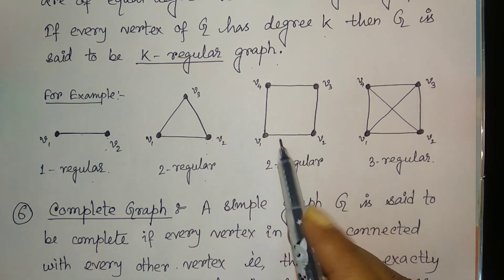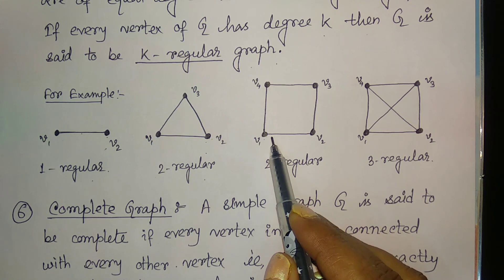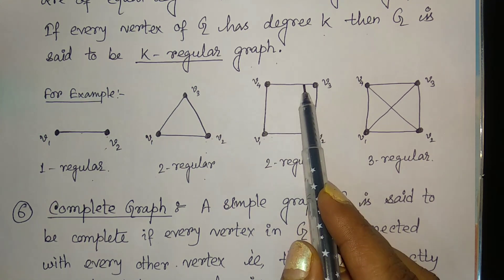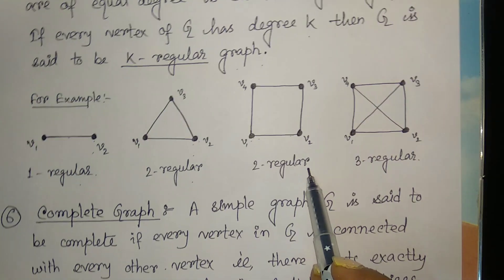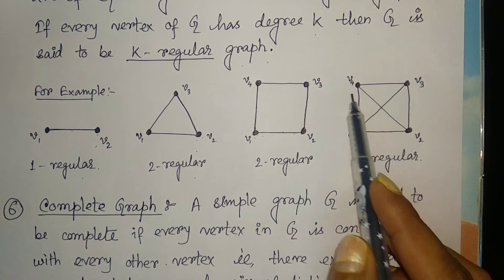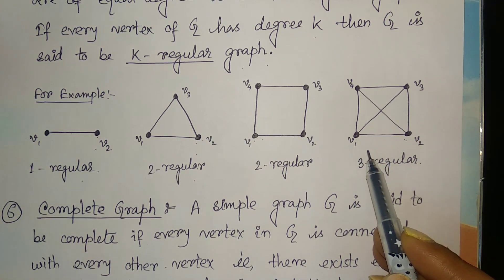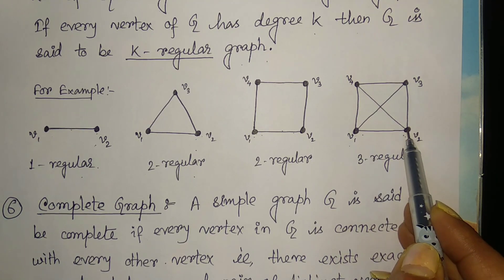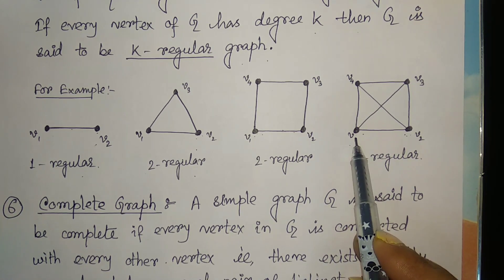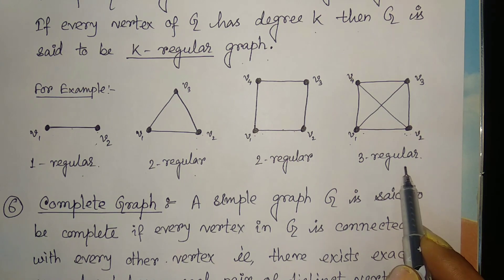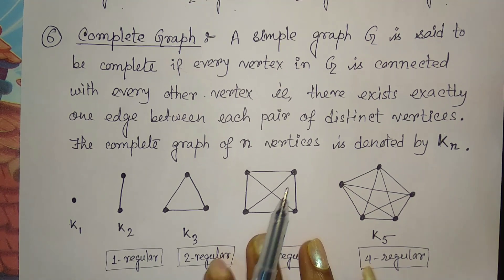With four vertices joined in a cycle, v1, v2, v3, and v4 each have degree 2 — so this is also a two-regular graph. If we add the two diagonals to that same four-vertex graph, then v1, v2, v3, and v4 each have degree 3, making it a three-regular graph.